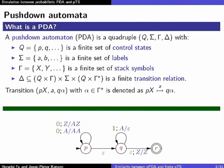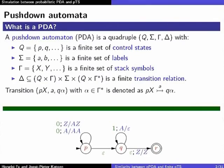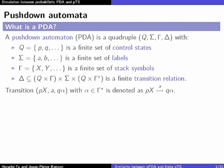Here is a famous example. It recognizes the language zero to the power n, one to the power n, for n larger than zero. If you see a zero you push an A; Z denotes the empty stack in the beginning. If you see a zero again you push an A. At some point you do an epsilon transition, and here you pop the ones, getting to the success state only if the number of ones coincides with the number of zeros.